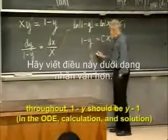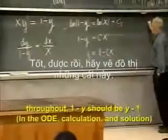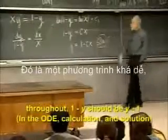Well, let's write this in a more human form. So that's y is equal to 1 minus cx. Good. All right, let's just plot it out. So these are the solutions.